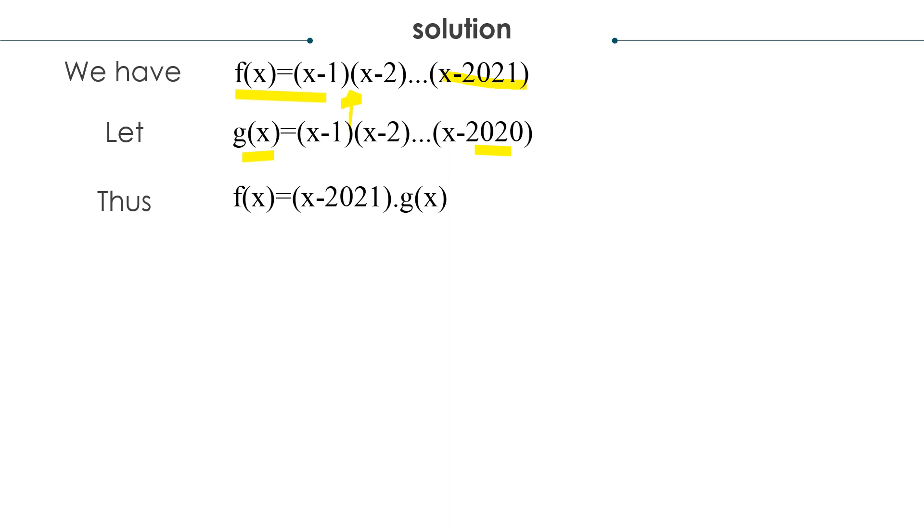I get f(x) equals g(x)(x-2021), or I could write (x-2021) times g(x). Seeing the properties of multiplication, it can go both sides.